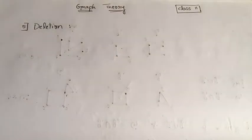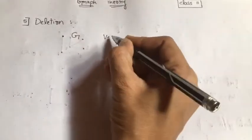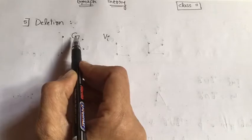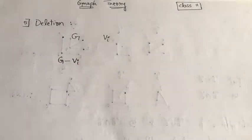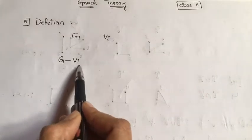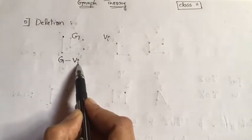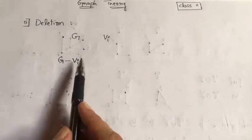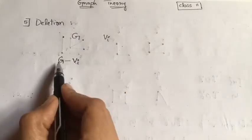Now deletion. There are two types of deletion operations: one is deletion of a vertex and another one is deletion of an edge. If g is my graph and vi is any vertex of graph g, then g minus vi denotes a subgraph of g obtained by deleting vertex vi from graph g. Deletion of a vertex means deletion of all those edges which are incident on that particular vertex.